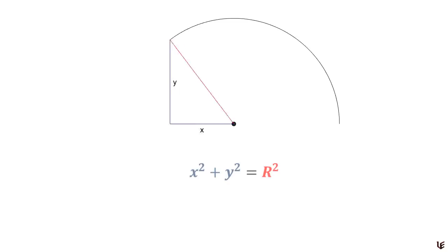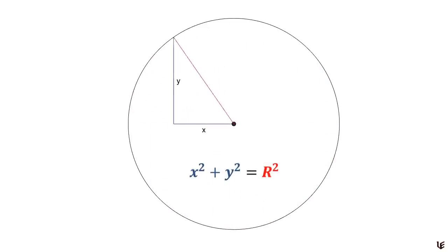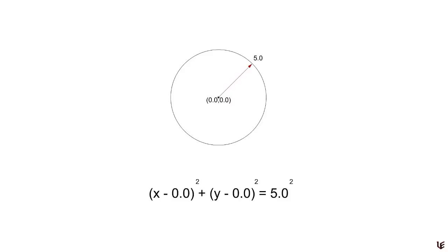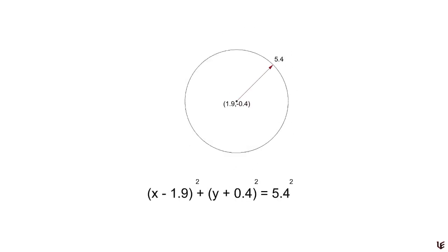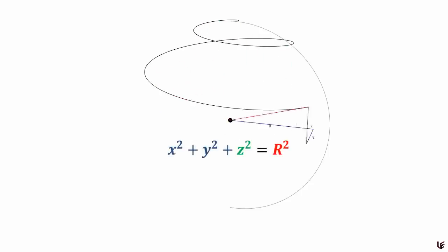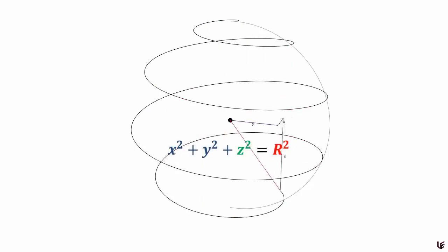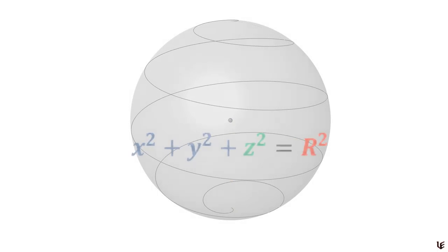Let's begin by looking at 4D objects from a more mathematical point of view. Consider the formulation of a circle — we can construct a circle algebraically using the Pythagorean theorem, and change its location and size by changing its center coordinates and radius. But that's only in two dimensions. In three dimensions we have an additional z-axis, and we account for this using the Pythagorean theorem in three dimensions, which results in an additional z-squared term in our equation.